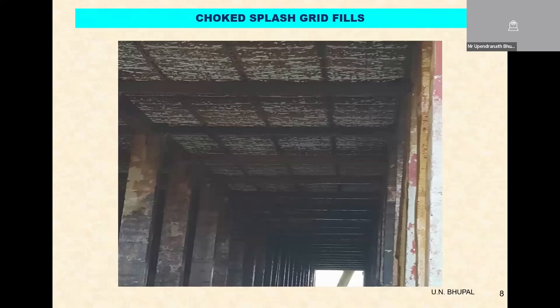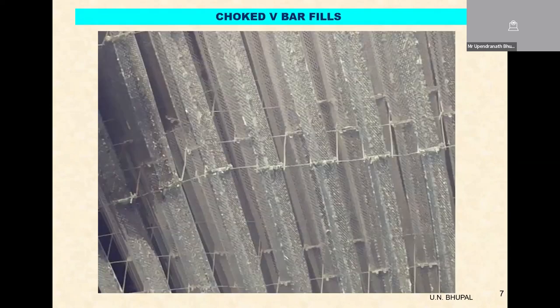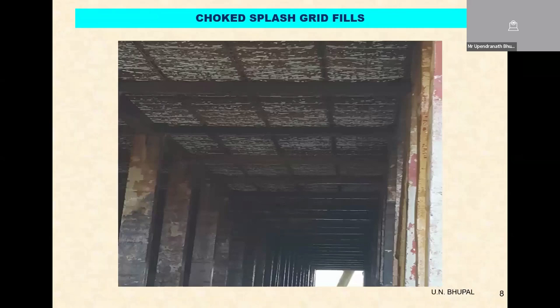This is another plant — NLC Tuticorin. This was a splash grid. You have seen how high the voidage is — 50 by 50 centimeter openings — even those openings are choked here. This is a seawater cooling tower. It was expected that without pretreatment, the splash grid would still survive. But you can see there is so much debris in the heat transfer media that the thermal performance was severely affected.